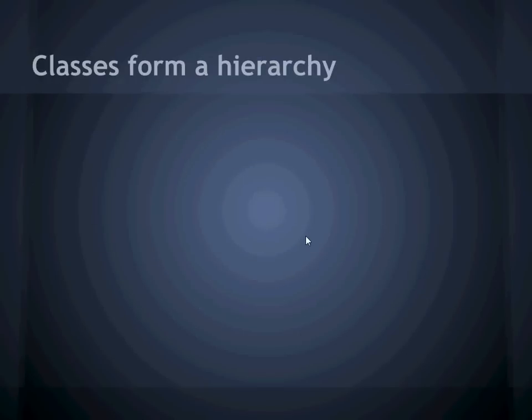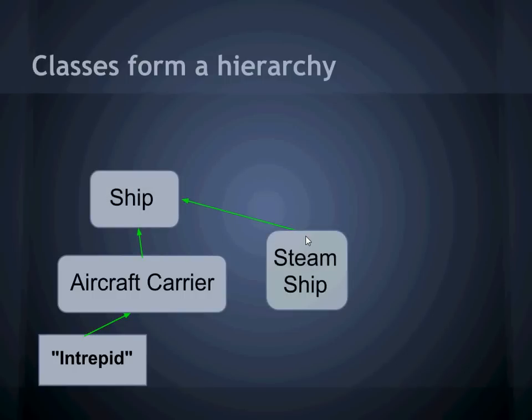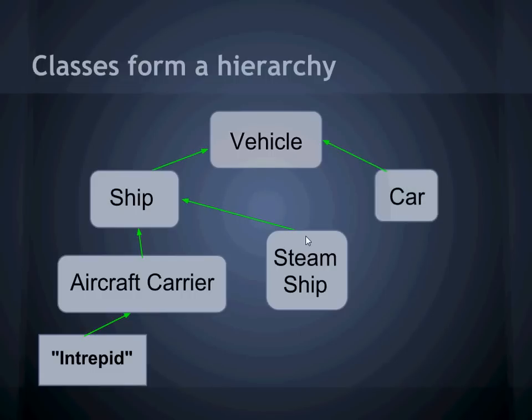Classes have another useful property known as inheritance. This is a way of relating classes to each other in a hierarchy. Let's say we wanted to classify the Intrepid. The Intrepid is an instance of an aircraft carrier. More generally, it's a ship. But describing it as an aircraft carrier distinguishes it from other types of ships, such as steamships. A ship is a device for transportation across water. So more generally still, you could call it a vehicle. This links it to other types of vehicles, such as cars. And if you were talking about a specific car, you might further describe it as a Civic. You could carry on in this fashion to categorize everything that exists.